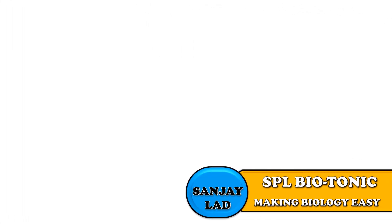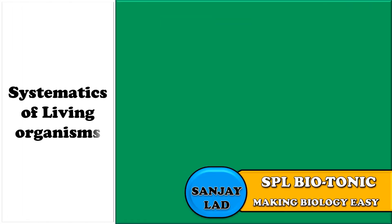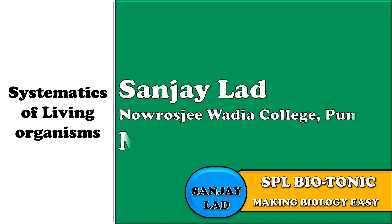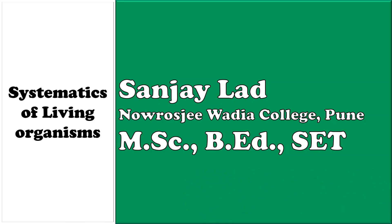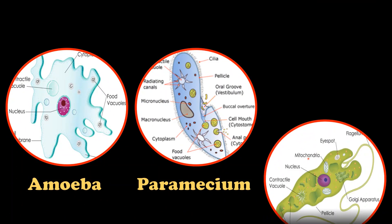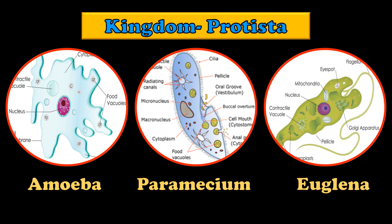Hello everyone! Welcome to one more video of Special Bio-Tonic. Students, you all must have studied organisms like Amoeba, Paramecium and Euglena. These organisms belong to Kingdom Protista.